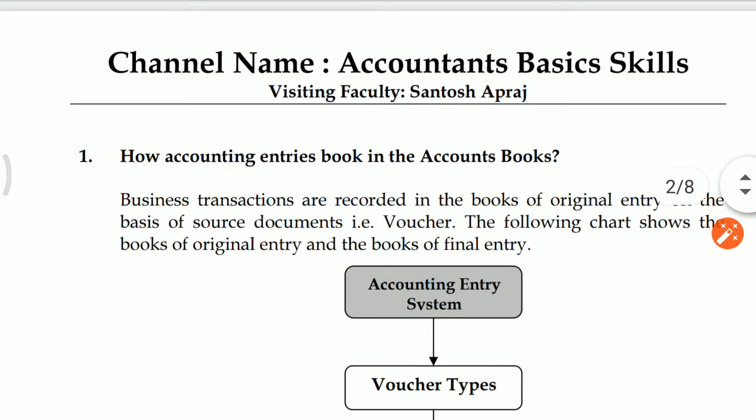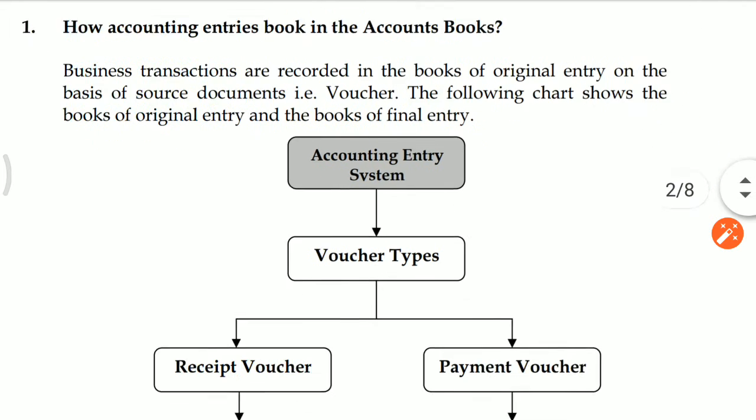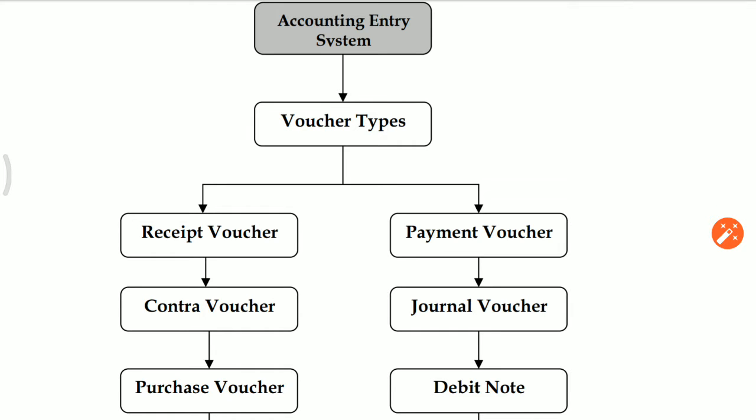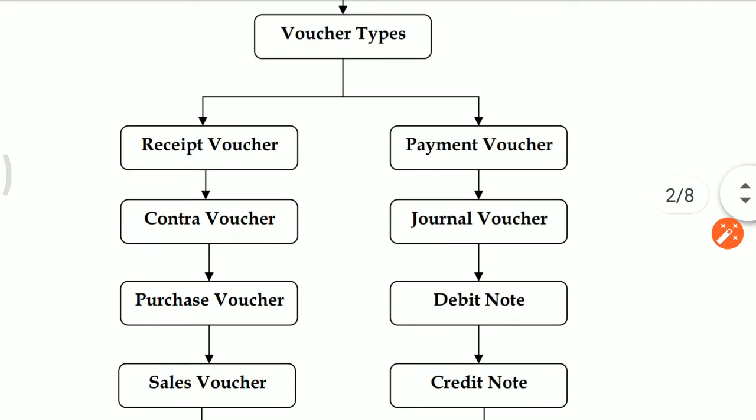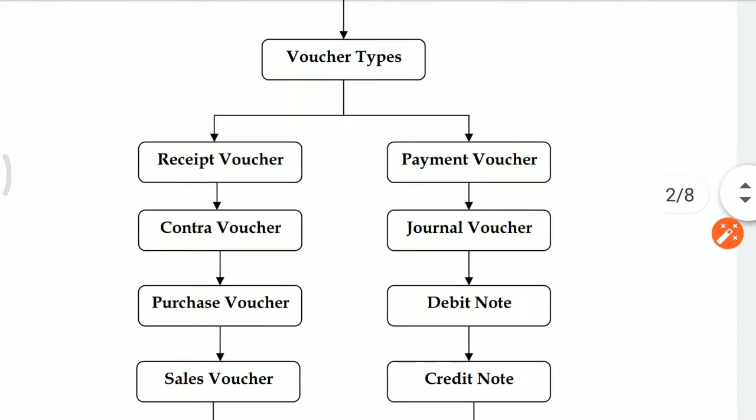The first question is: How Accounting is entered in the Accounting Books? Friends, Voucher is a Heart of Account Books. Business transactions are recorded in the books of original entry on the basis of source documents. The following chart shows the books of original entry and the books of final entry. If you perfectly understand the flowchart, you become master.